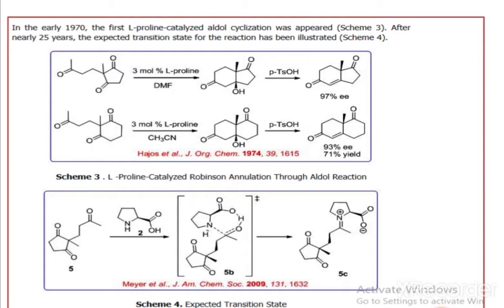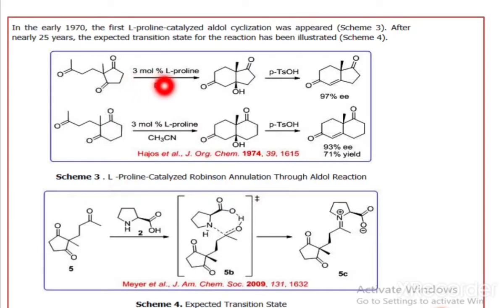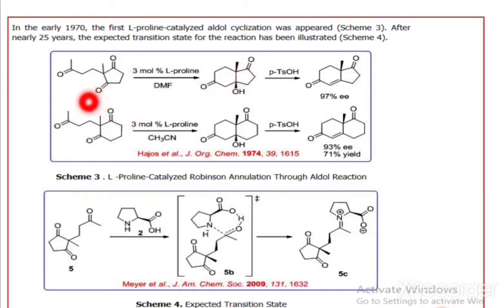In the early 1970s, the first proline-catalyzed aldol reaction appeared. This is scheme number 3. The reaction involves Robinson annulation through the aldol reaction. In the first example, 3 mol% L-proline in the solvent dimethylformamide (DMF) is used. Here we get one intermediate compound.